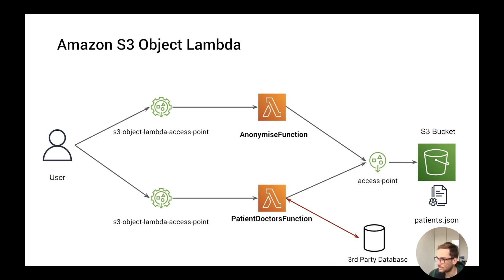What Object Lambda lets you do is add a Lambda function before accessing the data. The Lambda function gets the patient.json file as an input event and you can perform your changes — for example, anonymizing the data by removing personal data, or querying a third-party database. Let's say you want to cross your patient data with an external doctor database. You query that database and add the doctor information into the JSON file to send back to the user. Based on your use case, it can be removing data or adding data.